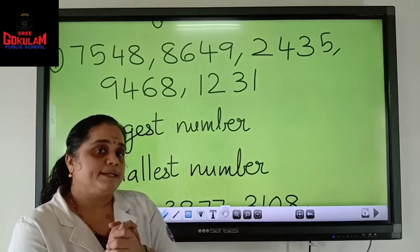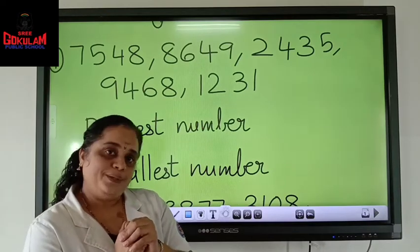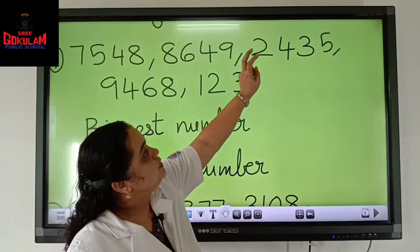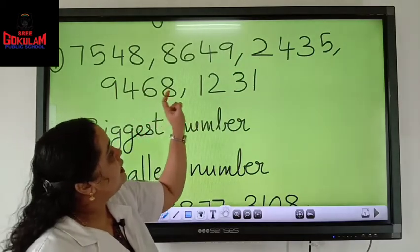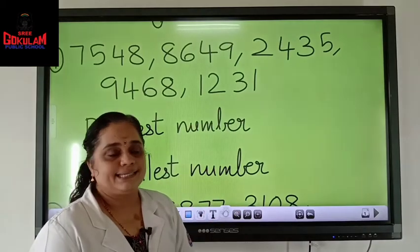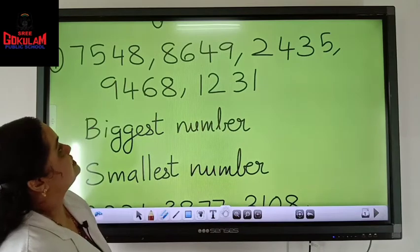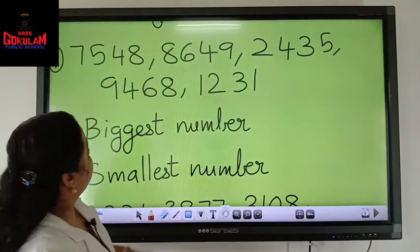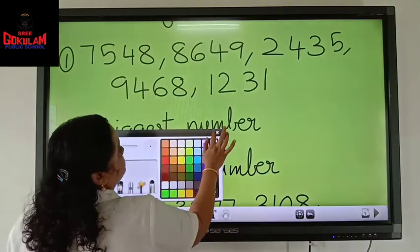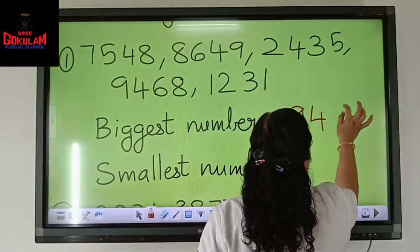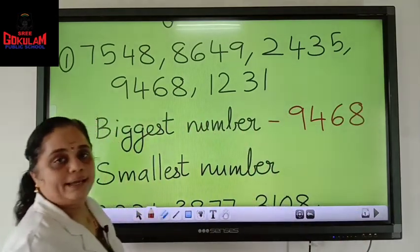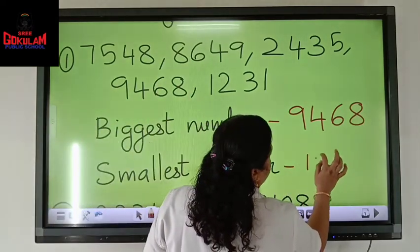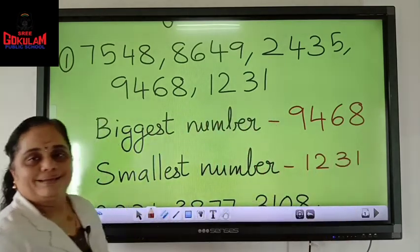But if all the thousands place digits are the same, then we have to go for the hundreds place. So here, 7 is in the thousands place, 8 is in the thousands place, 2 is in the thousands place, 9 is in the thousands place, and 1 is in the thousands place. Just find out which number is bigger. 9 is bigger, isn't it? So the biggest number is 9468. And the smallest number — in the thousands place you can see the smallest is 1231. Wasn't it that easy?